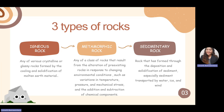Metamorphic rocks are any class of rocks that result from the alteration of pre-existing rocks — whether igneous, metamorphic, or sedimentary — in response to changing environmental conditions such as variation in temperature, pressure, and mechanical stress. Because of these factors, along with the addition and subtraction of chemical components, we can create a new type of rock known as metamorphic rocks.